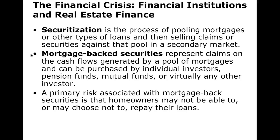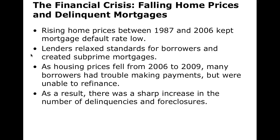The idea was that real estate doesn't go down in value, so if a mortgage gets in trouble, the bank can resell the house for more money — problem solved. Housing prices rose consistently from 1987 to 2006, which kept mortgage default rates very low, making mortgage-backed securities seem even safer. So lenders started relaxing standards and creating subprime mortgages. With less regulation on banks, if you had a heartbeat you could get a mortgage — no job, no income, no credit history, no problem.